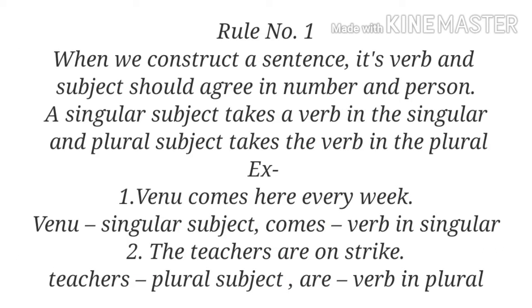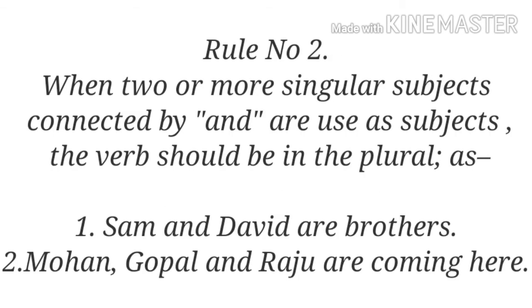To make our English grammatically correct with subject-verb agreement, remember the following rules. Rule number one: when we construct a sentence, its verb and subject should agree in number and person. A singular subject takes a verb in the singular, and a plural subject takes the verb in plural. For example, 'Venu comes here every week' — Venu is a singular subject and 'comes' is a singular verb. Example two: 'The teachers are on strike' — 'teachers' is a plural subject and 'are' is a plural verb.